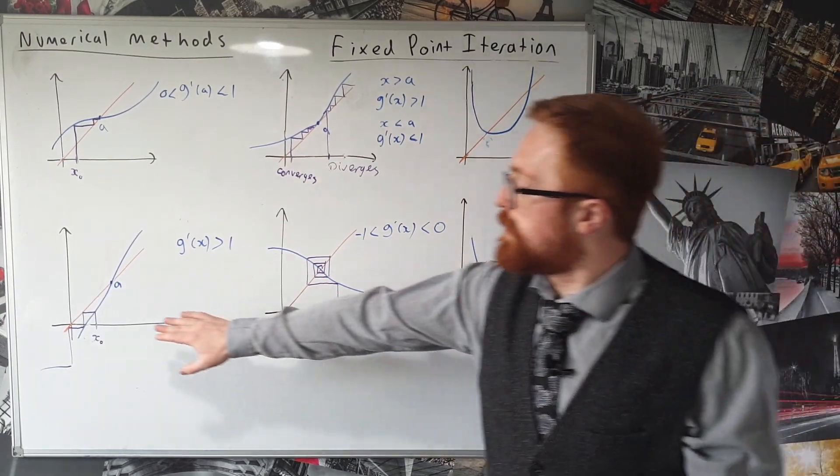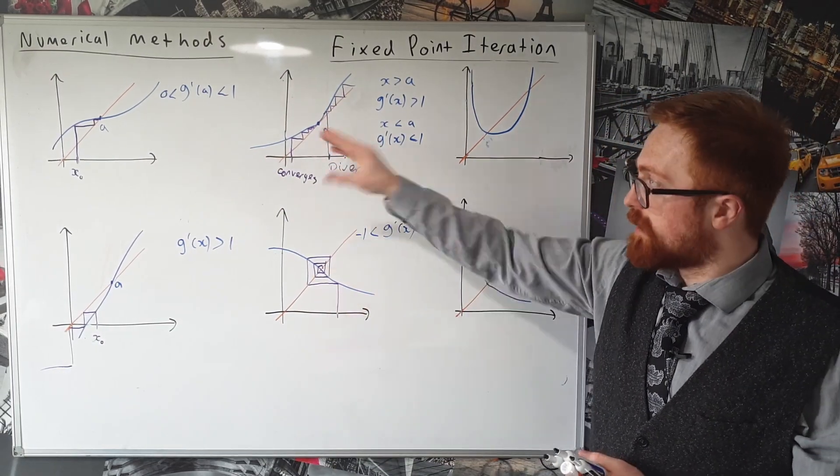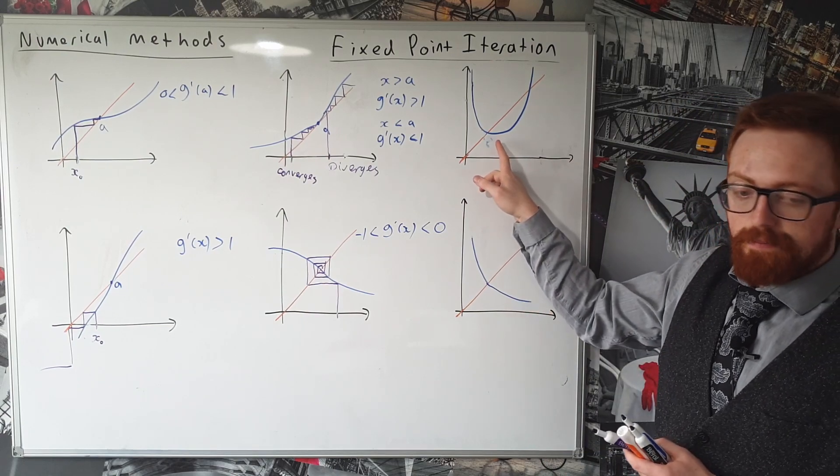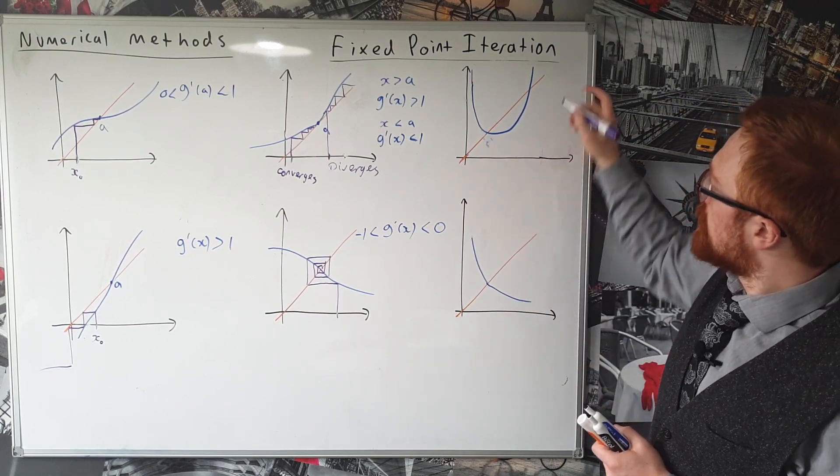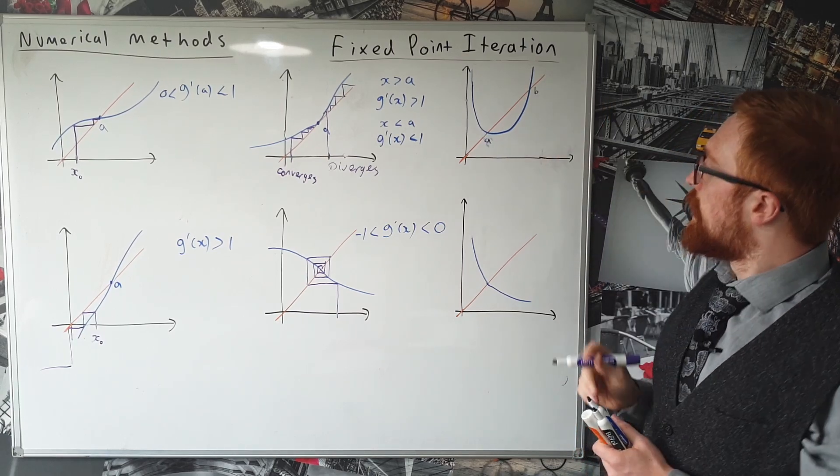Okay, so we've seen a few staircase diagrams, and we've seen a cobweb diagram. So they're the two types we can get. Let's have a quick look at this one here. So this one, we have two points, let's call them A and B.